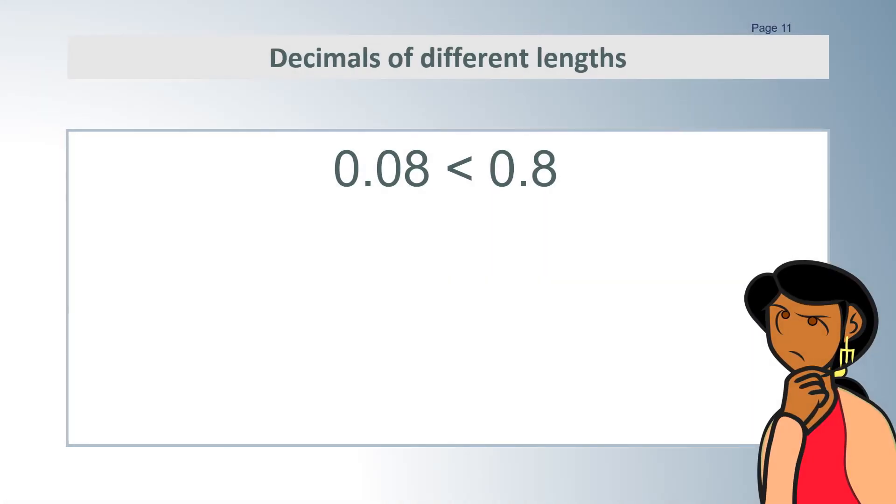Decimals of different lengths. 0.08 is less than 0.8. This is where decimals start to behave differently from whole numbers. Because 0.08 is a longer number than 0.8, we might think that it is the greater one. Or because both the numbers are 8, we might think that they are the same. But both of those ideas are wrong.